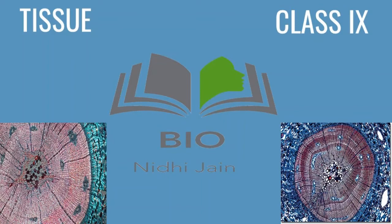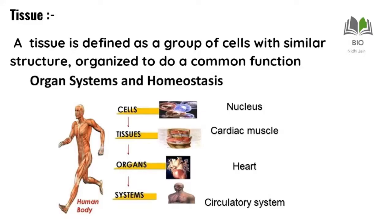Hello dear students, this video is for Class 9 and the chapter name is Tissue. What is tissue? It is a group of cells with similar structure and common function. We already went through the chapter on cells. As you can see in this slide, a number of cells form a tissue, a number of tissues form an organ, and a number of organs form an organ system.